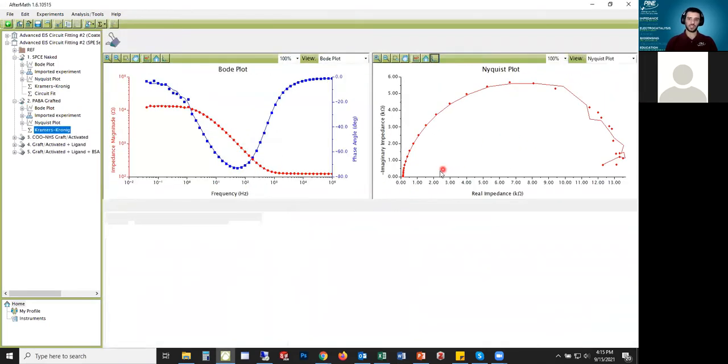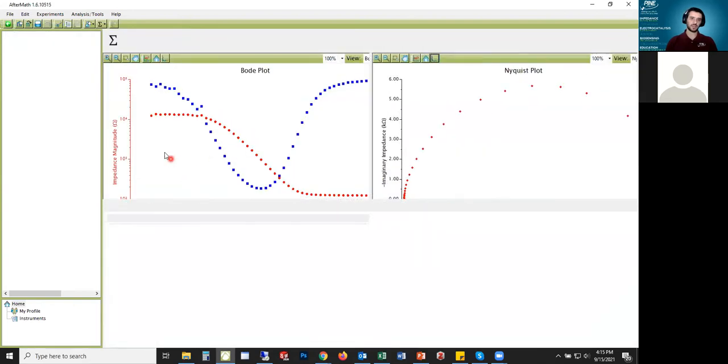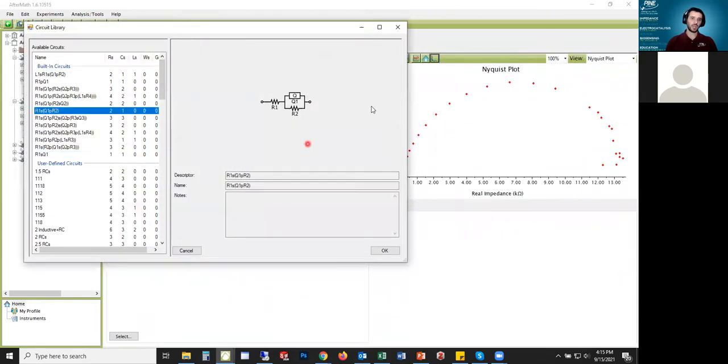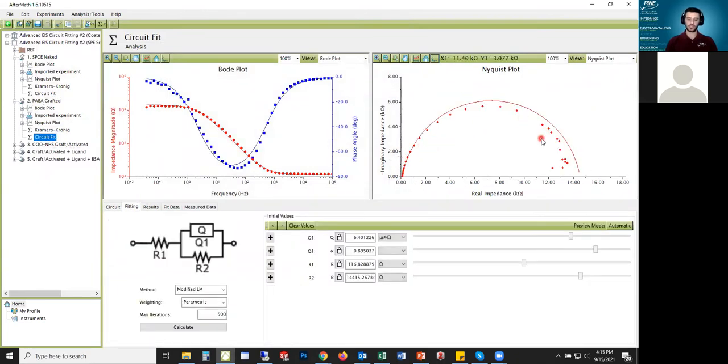The PABA grafted data was mostly just a simple Randalls element. In fact, it just looks kind of like a single Randalls element and then there was a little bit of noise at low frequency for sure. You see that the Kramers-Kronig doesn't fit this portion too well so I wouldn't expect the circuit fit to really fit the end very well either, but it just kind of looks like a simple Randalls element, almost like one semicircle, and so this is probably good enough honestly for this fit.